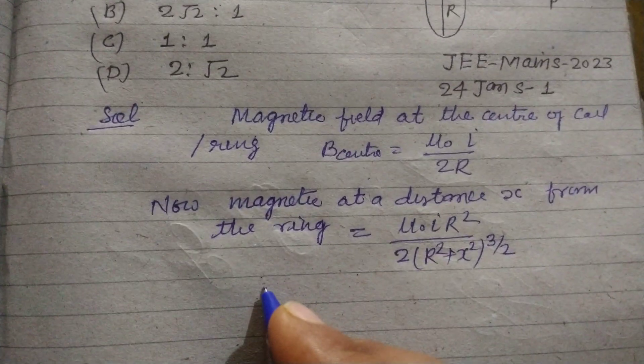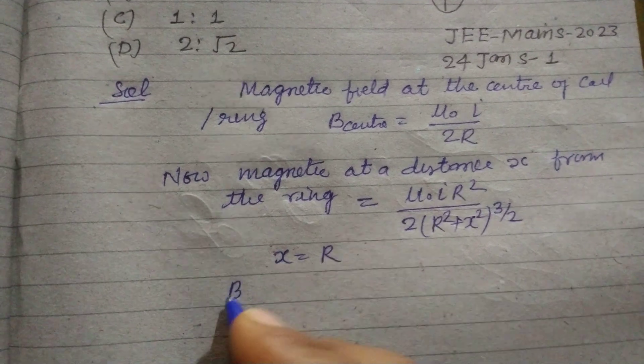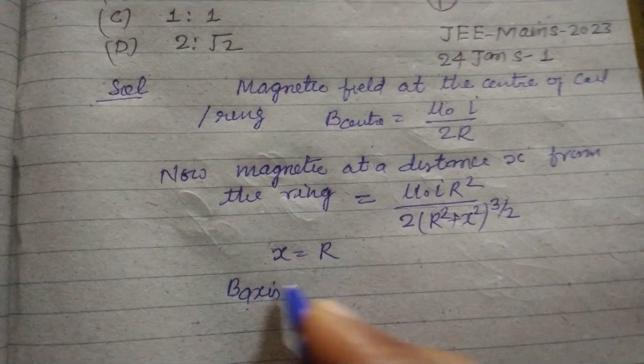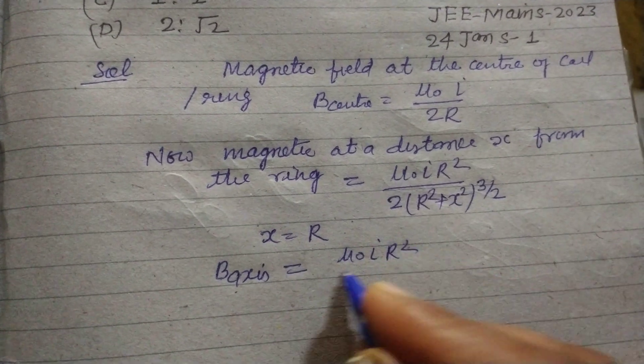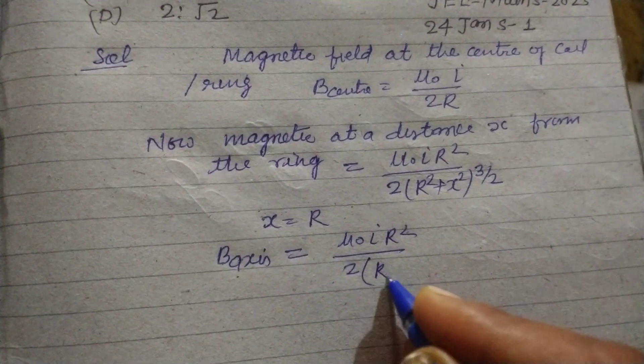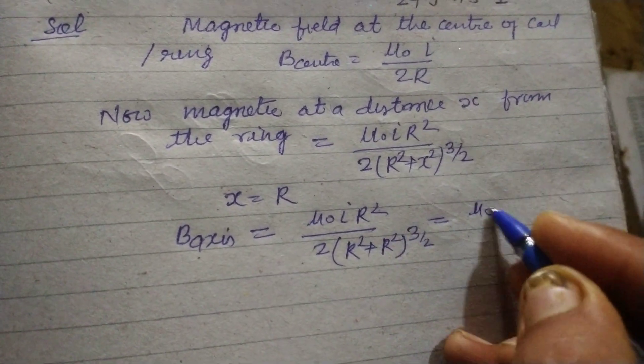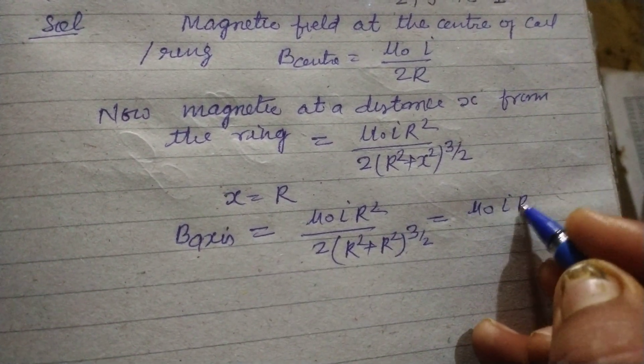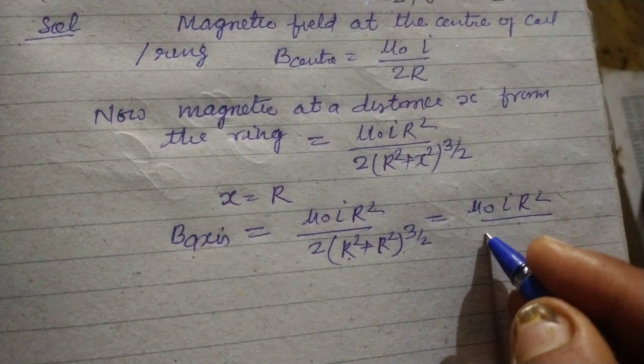Now here X equals R. So B axis, the magnetic field at axis, is μ₀IR² upon 2(R² + R²) to the power 3 by 2, and this is μ₀IR² upon 2R².